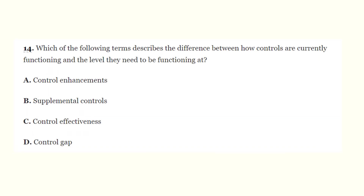Question 14: Which of the following terms describes the difference between how controls are currently functioning and the level that they need to be functioning at? The correct answer is control gap.